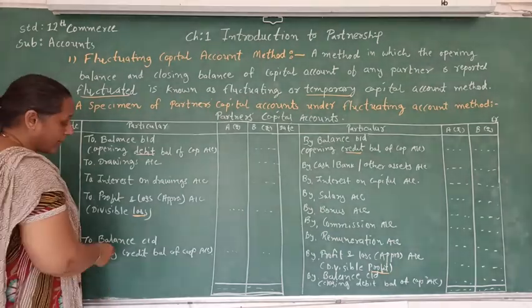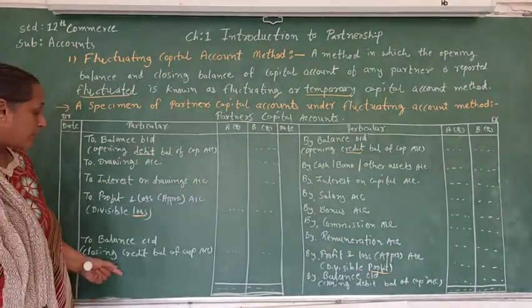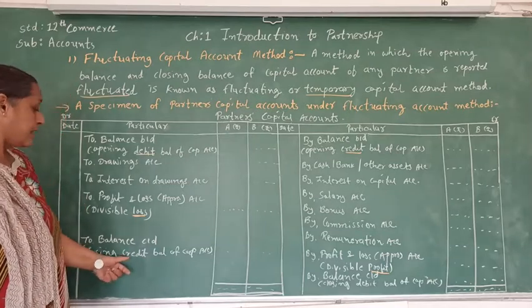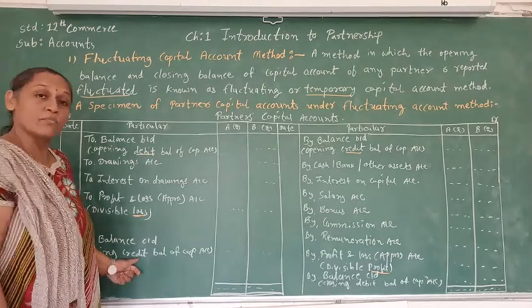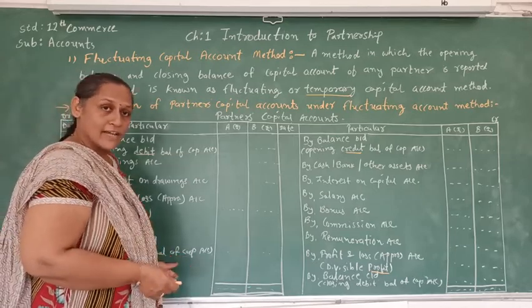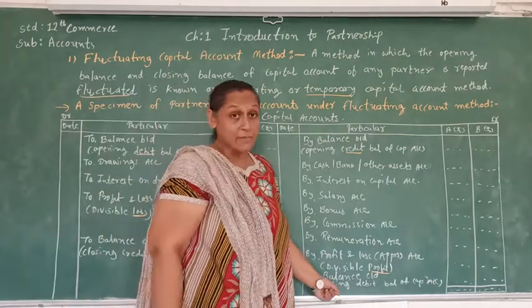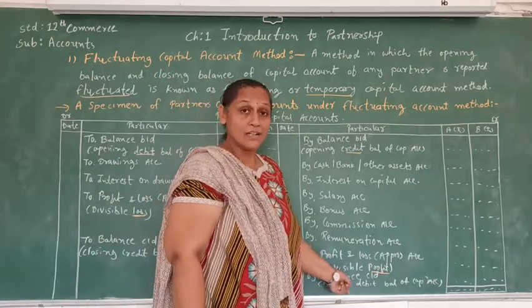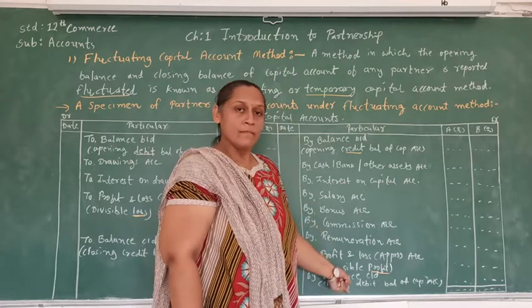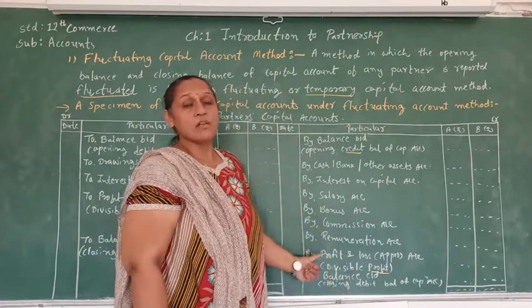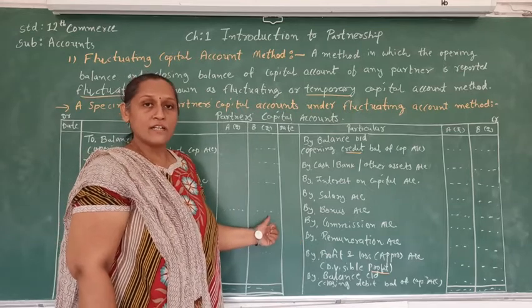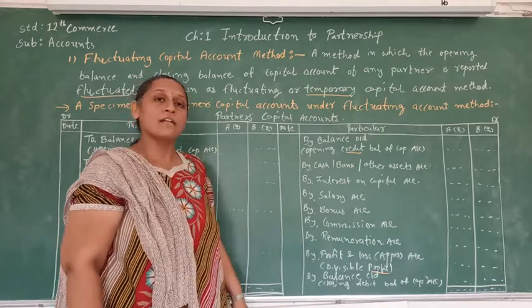This is how we find out the closing balance of the partner's capital account. If there is a credit balance, it is written on the liability side of the balance sheet. If any debit balance is found in the partner's capital account, it is written on the asset side of the balance sheet. This is how we prepare a fluctuating capital account.